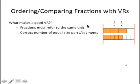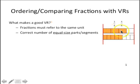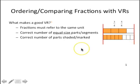Also, we need the correct number of equal-size parts or segments for each model. For the model of three-fourths, we should have four equal-size segments — and we do. And for five-eighths, we should have eight equal-size segments — and we can see that we have eight equal-size segments here. Finally, we need the correct number of parts shaded or marked: for three-fourths, three shaded parts out of four; and for five-eighths, five shaded parts out of eight.